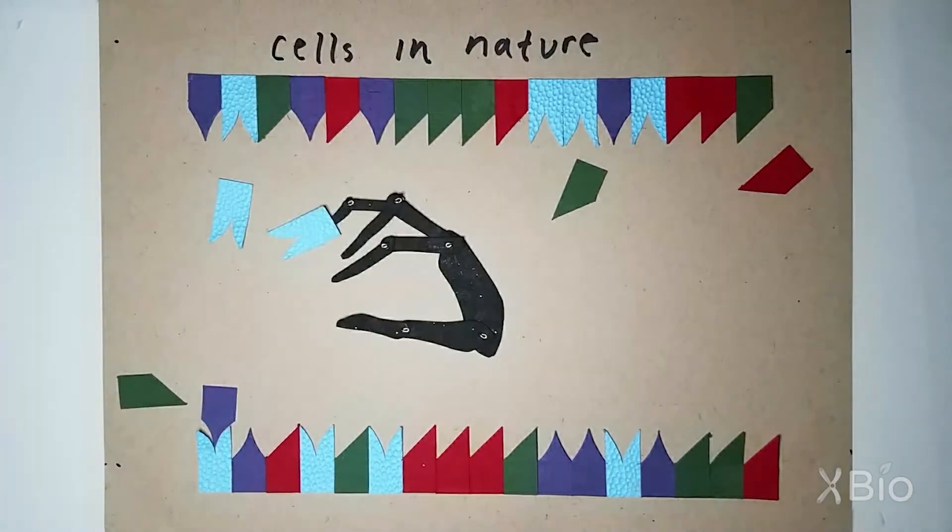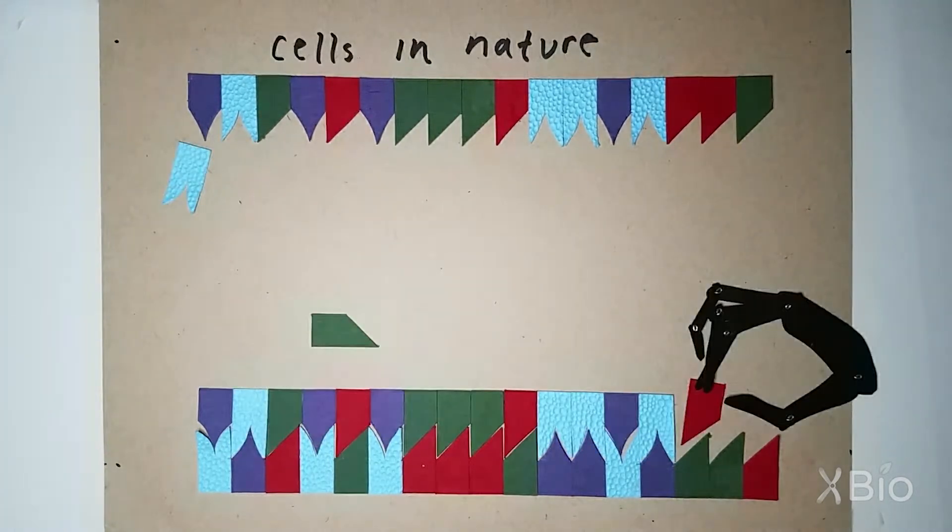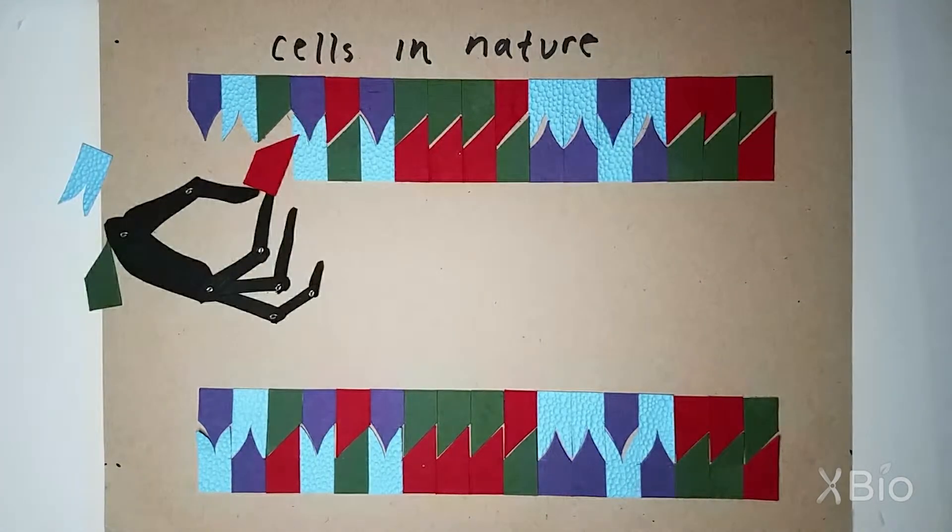To do this, they use a molecular machine called DNA polymerase, which zips along a strand of DNA, and pulls in complementary bases as it goes.